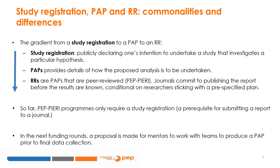Study registrations are for publicly declaring one's intention to undertake a study that investigates a particular hypothesis. PAPs go beyond study registrations by providing details of how the proposed analysis is to be undertaken. RRs are a type of PAP required by some journals with specific guidelines to follow. They go through a peer review process at the journal, and if invited to submit a full paper, the journal commits to publish it before findings are known.